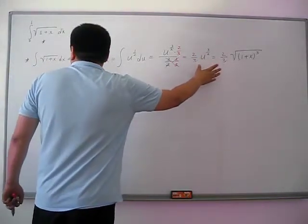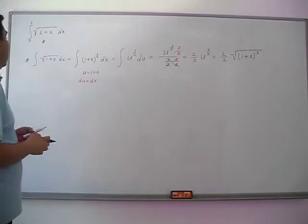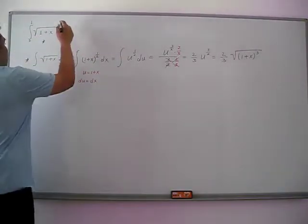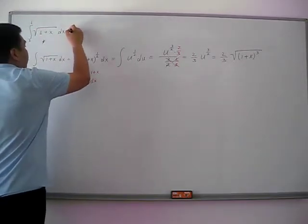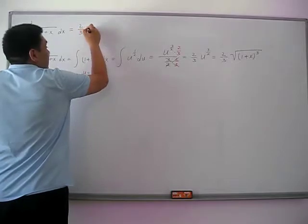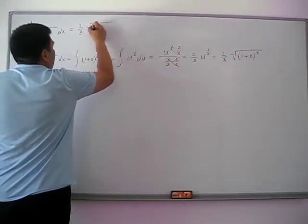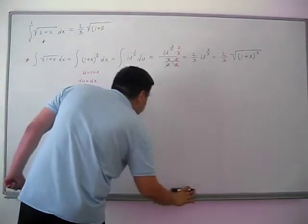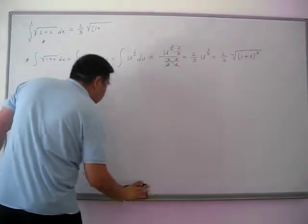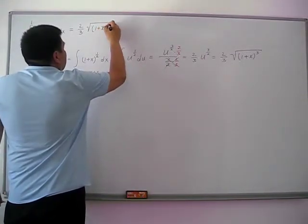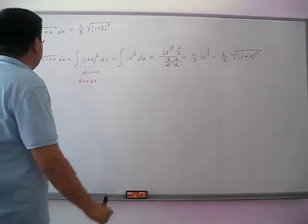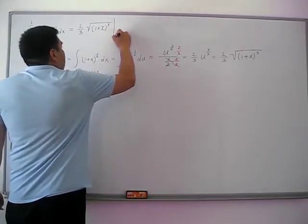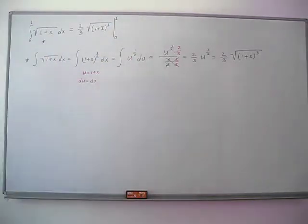Now, once we've finished solving the integrals, now we can use our result to evaluate the definite integral. So, the integral here will be 2 third times square root of 1 plus x cubed. And we must evaluate our integral from 0 to 1.